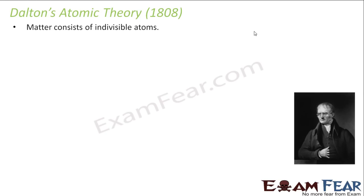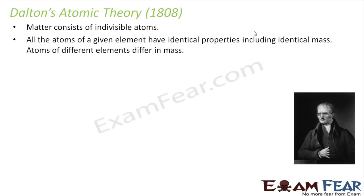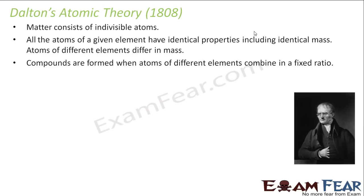Dalton said that matter consists of indivisible atoms — that means according to Dalton we cannot further divide atoms, which was however proved incorrect in later times. The theory said that all the atoms of a given element have identical properties including identical mass. Atoms of different elements have different mass. Compounds are formed when atoms of different elements combine in a fixed ratio — compounds, elements, mixtures, all these things you would have studied in your chemistry.